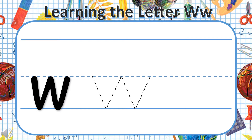Now we are going to trace the letter W, so follow with me. We are going to start at the middle line — can you see the red arrow? Put your pencil there. Go down to the bottom line and stop. Don't lift your pencil. Go back up to the middle line and stop, then go back down again to the bottom line, and again up to the middle line. And then we are finished.